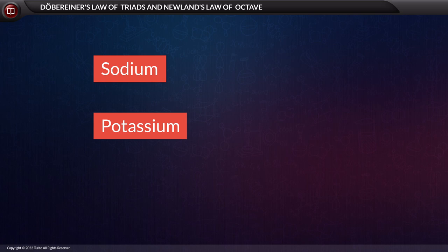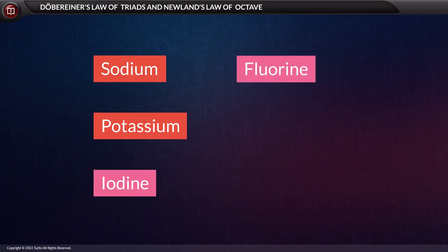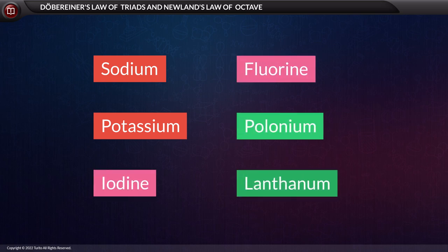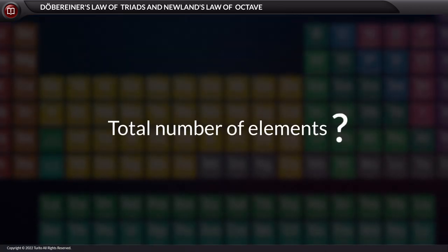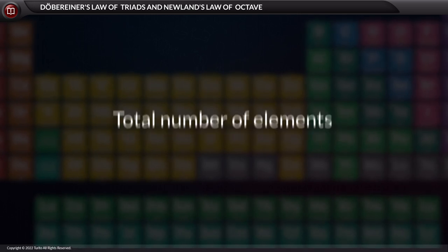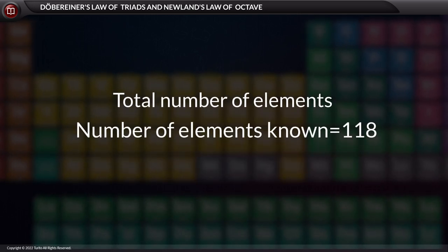Sodium, potassium, iodine, fluorine, polonium, lanthanum, and so on — we do hear the names of so many elements in our daily lives. Have you ever wondered what the total number of elements in the world is? Well, there are a total of 118 elements known to the world.